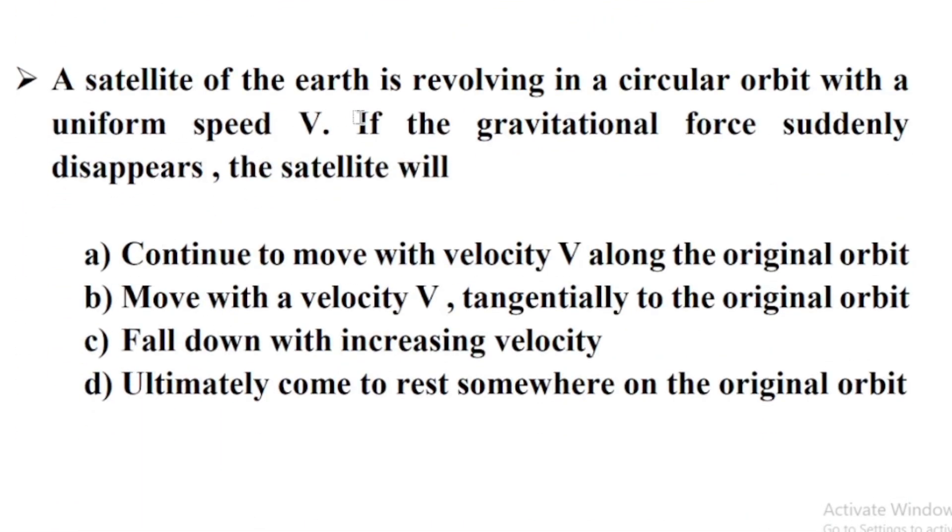A satellite of the earth is revolving in a circular orbit with a uniform speed V. If the gravitational force suddenly disappears, the satellite will Option B. Move with a velocity V tangentially to that original orbit.